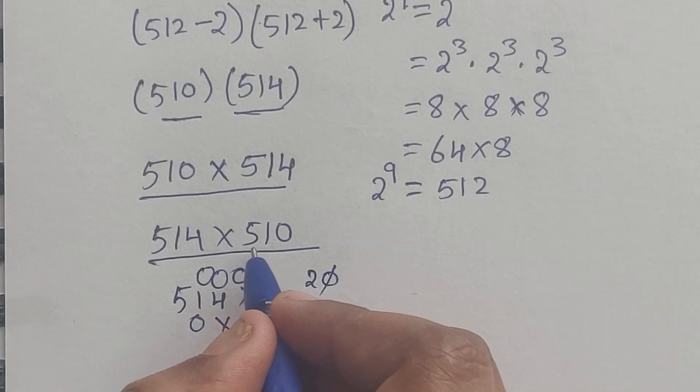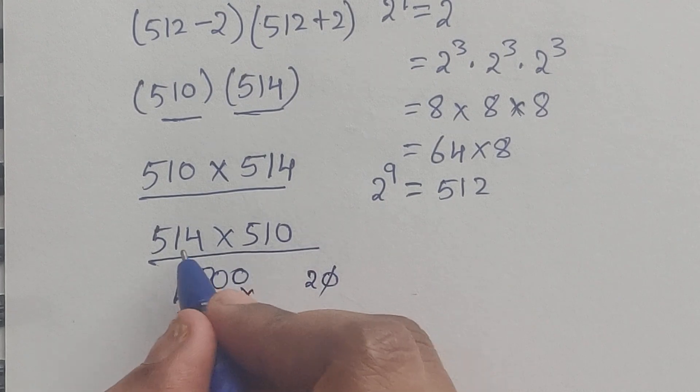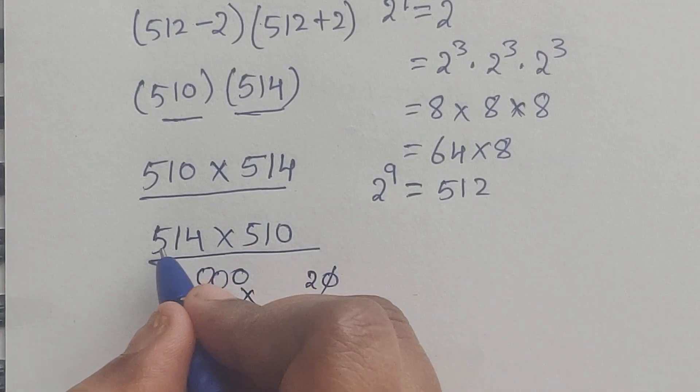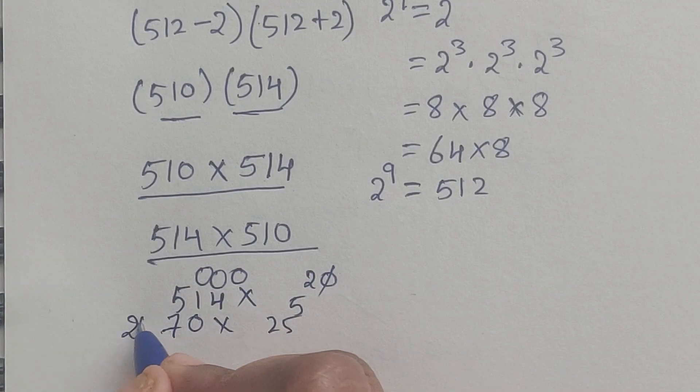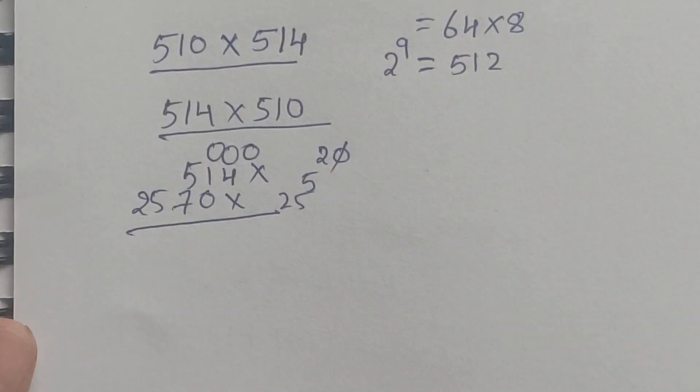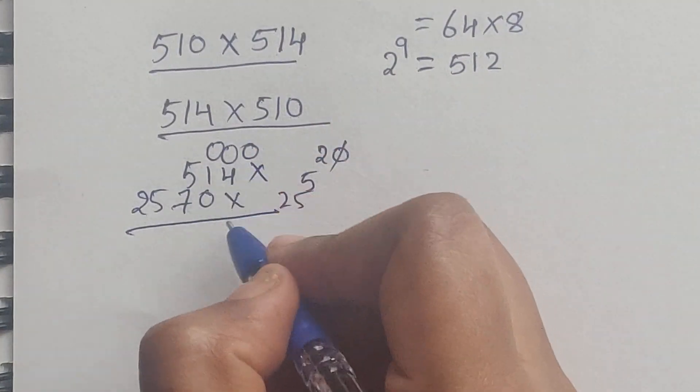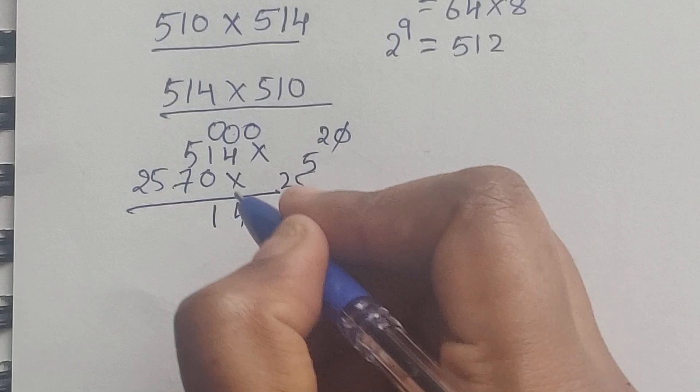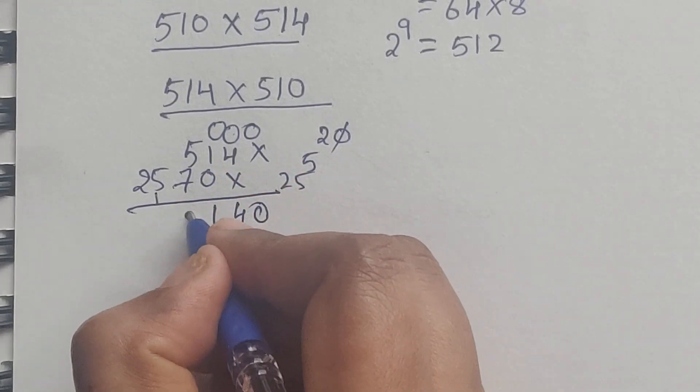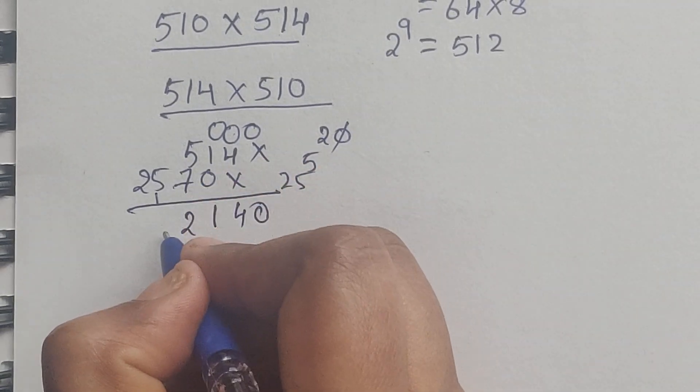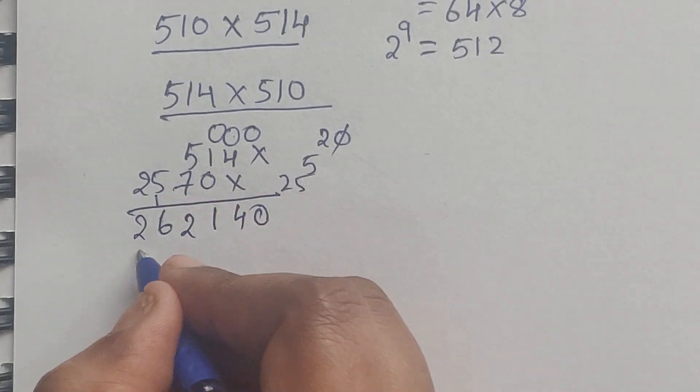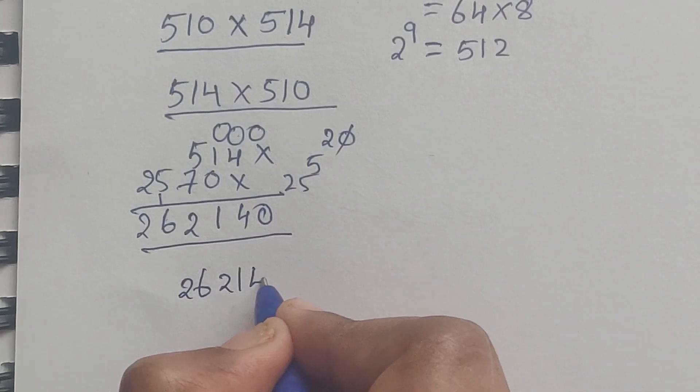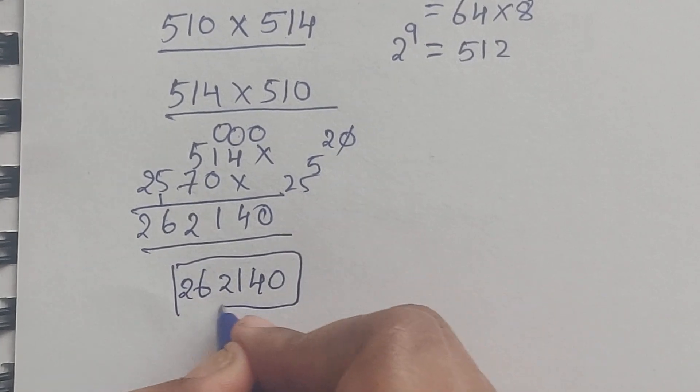So writing the digits and adding: 5 plus 2 is 7. Add all these numbers: 0, 0, 4, 1... 5 plus 7 equals 12, carry the 1, 5 plus 1 is 6, and 2. So 262,140 is the answer.